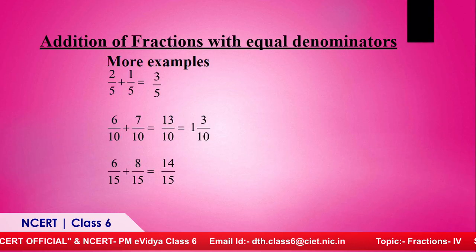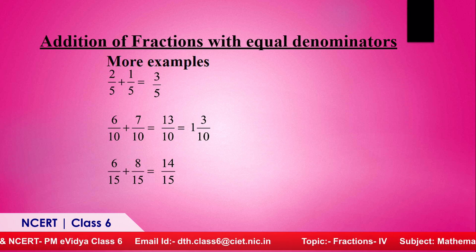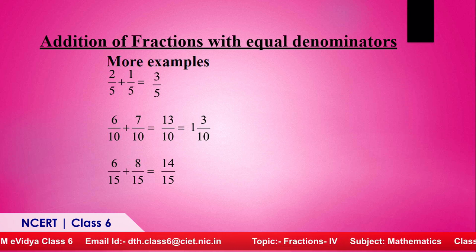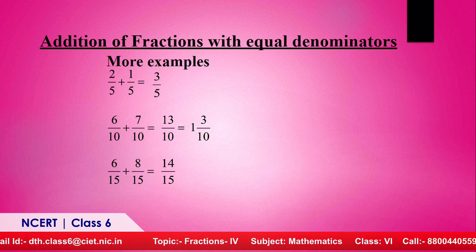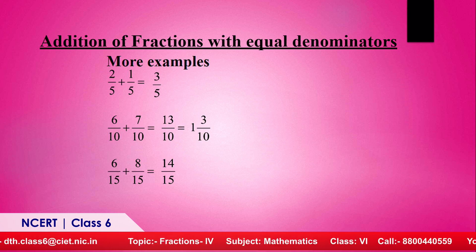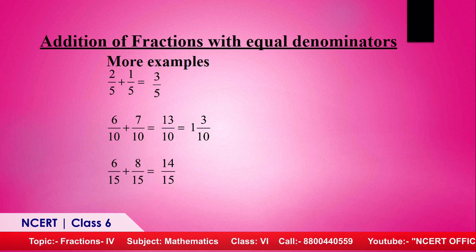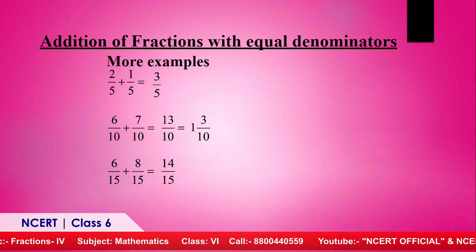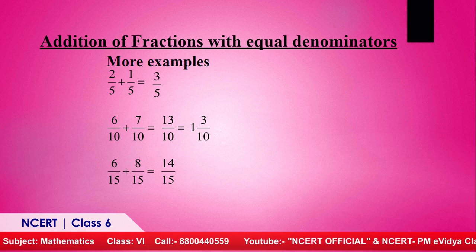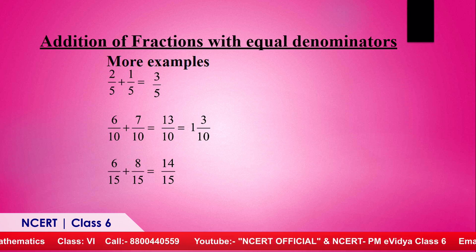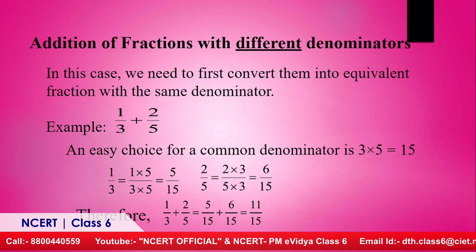More examples of addition with equal denominators: two upon five plus one upon five equals three upon five. Six upon ten plus seven upon ten equals thirteen upon ten, which converts to one and three upon ten as a mixed fraction. Six upon fifteen plus eight upon fifteen equals fourteen upon fifteen.